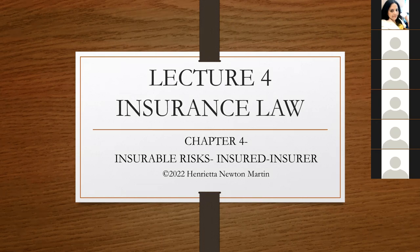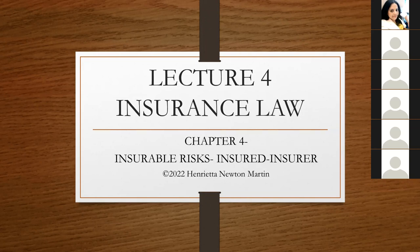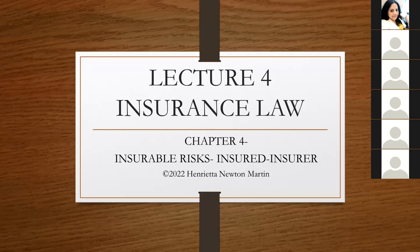For those who have just joined: today's class is about insurable risks. We already learned what an insurance policy is, who the insured is — that is the person, property, or thing whose loss or risks are covered — and the insurer is a person or company who covers the risk, loss, or damage for the insured. Today we are talking about risks that are capable of being covered under an insurance policy, which are insurable risks.